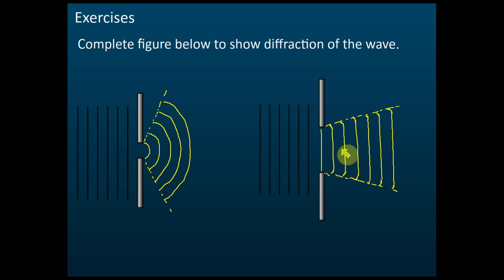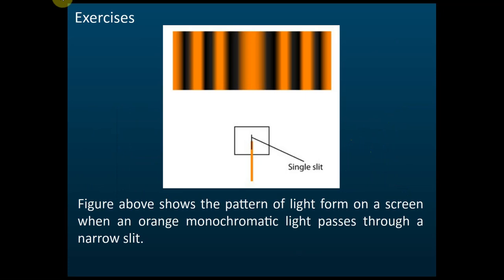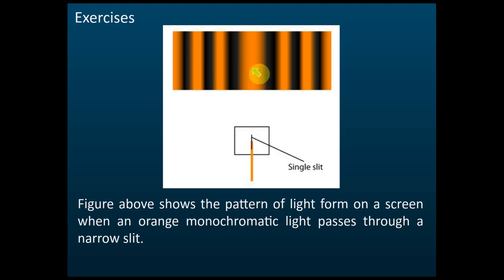This is a very common exam question. The question says: 'The figure above shows the patterns of light formed on a screen when orange monochromatic light passes through a narrow slit.' The question does not tell you this is diffraction, but you see the single slit. You need to know that a single slit experiment is related to diffraction, and you can identify it from the patterns.